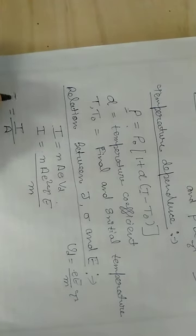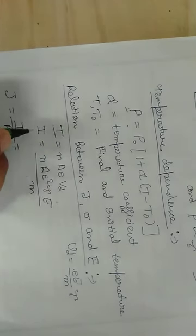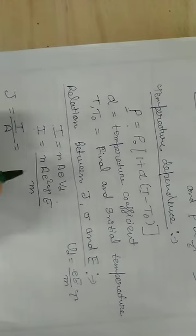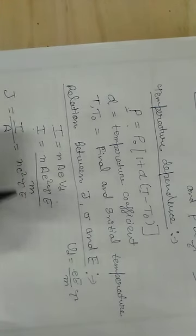Current upon per unit area - that is your current density. So we will shift the area, so your equation will become like this.